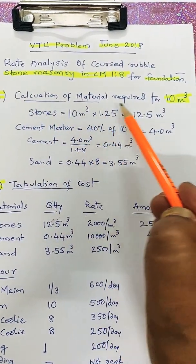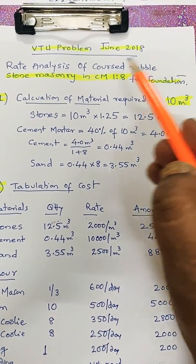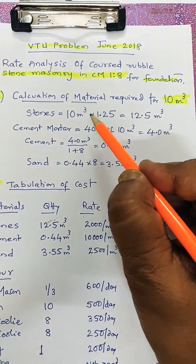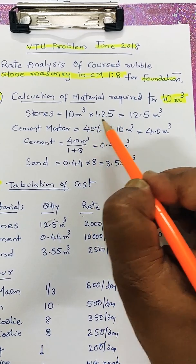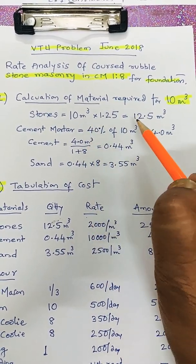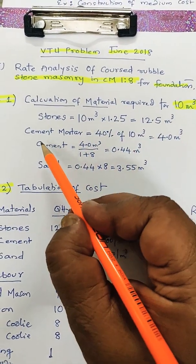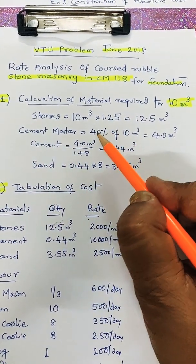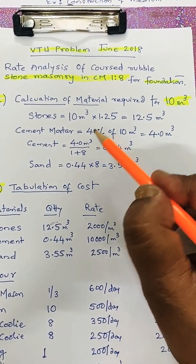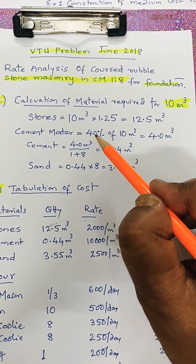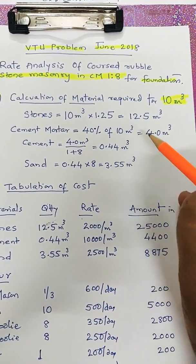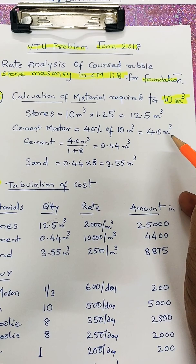Step one: calculate the materials required for 10 cubic meters of stone masonry. Stones: 10 m³ multiplied by 1.25 — including wastage, we need 1.25 times the volume — that gives 12.5 m³. Cement mortar is 40% of the 10 m³, since mortar gaps are more in stone masonry, so we require 4 m³ of cement mortar.